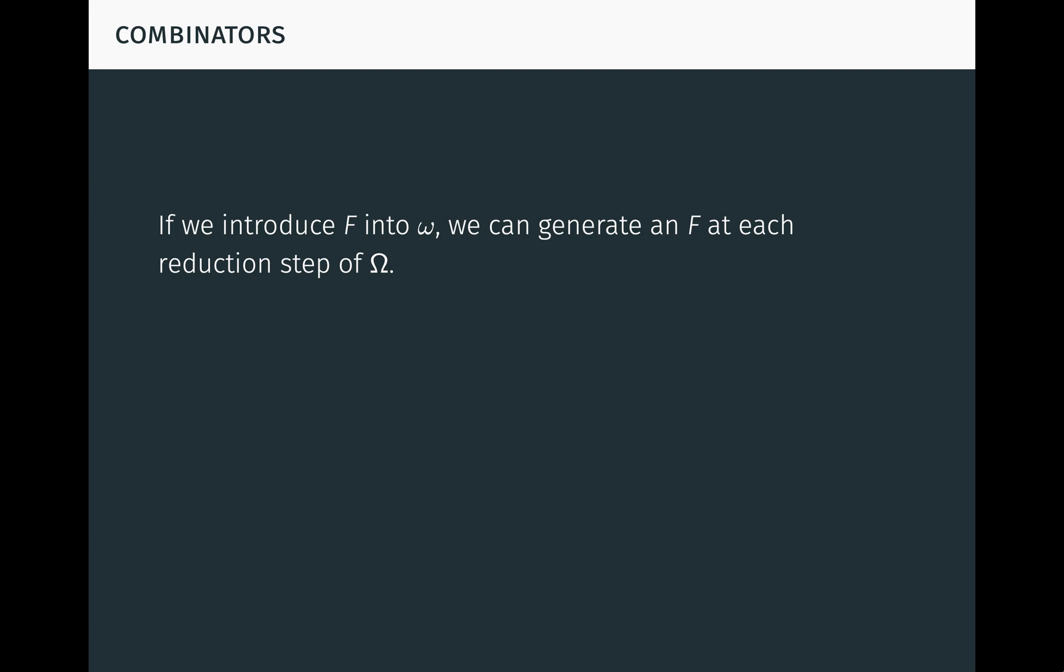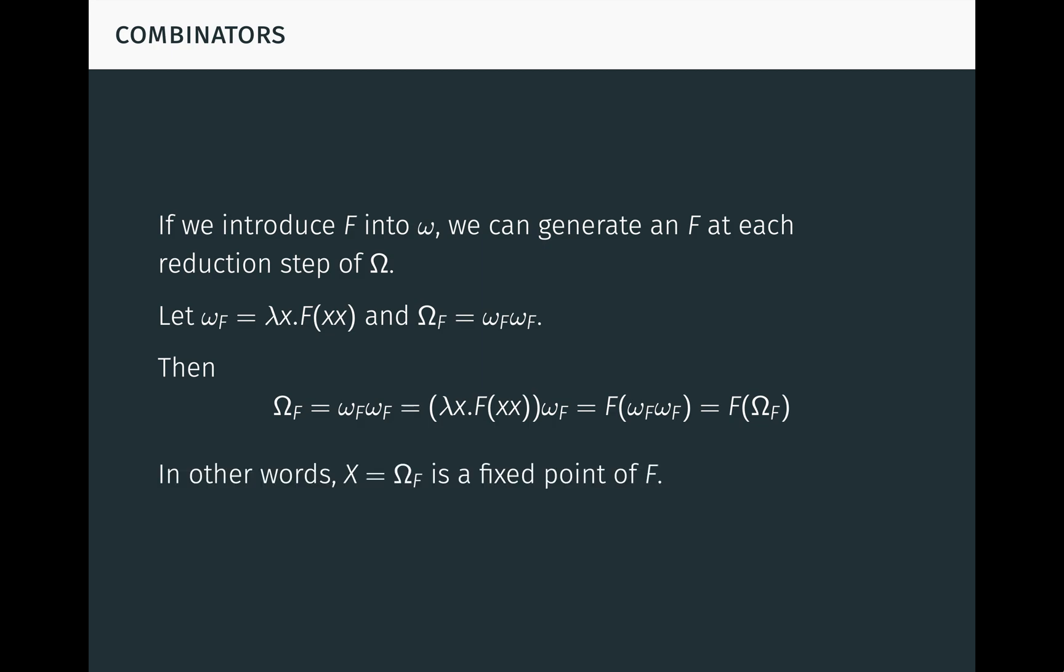If we introduce f into little omega, we can generate an f at each reduction step of big omega. Let little omega f be lambda x f of x x, where x does not occur free in f, and let big omega f be little omega f little omega f. Then it's easy to see that big omega f reduces to f of big omega f. In other words, big omega f is a fixed-point of f.